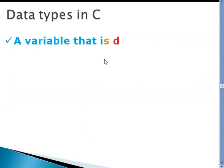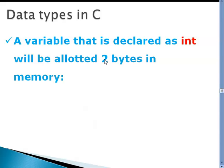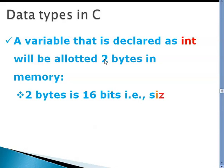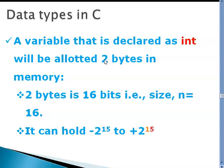Now there are 2 bytes allocated for a variable that is declared as int. 2 bytes, which means each byte is 8 bits, so 2 into 8 is 16 bits. So we see that the size n is equal to 16. It can hold minus 2 to the power of 15 to plus 2 to the power of 15 minus 1.